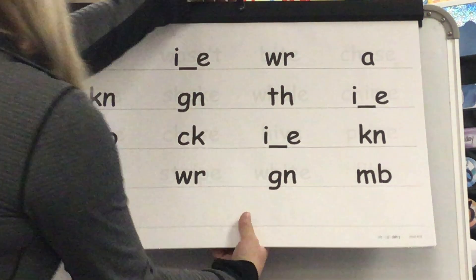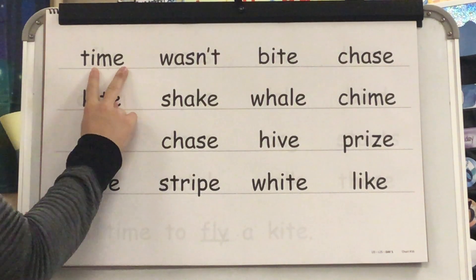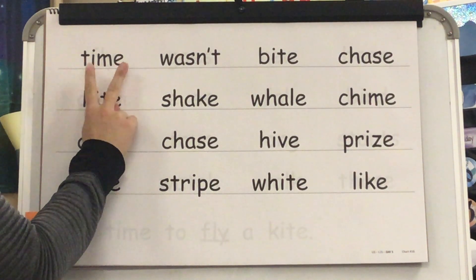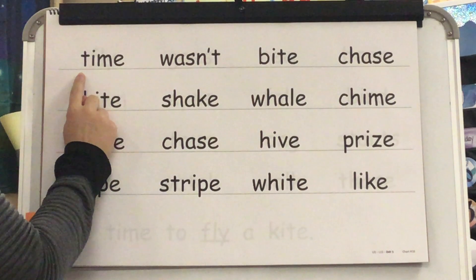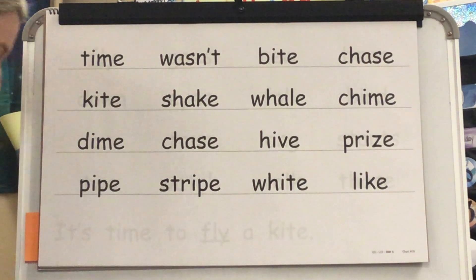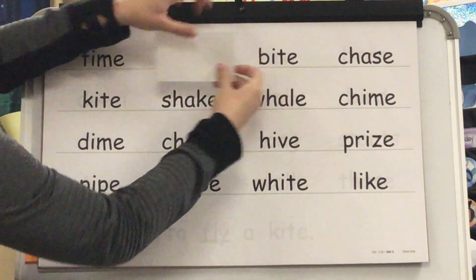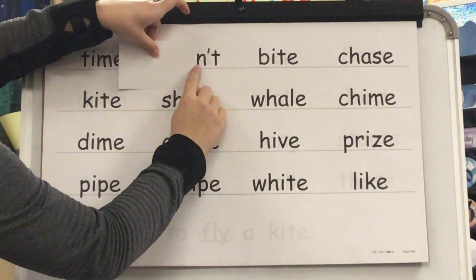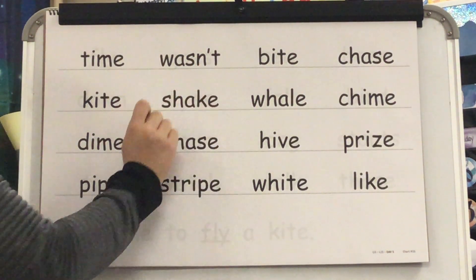Time to put our sounds into words. Sound: I. Blend: T. I'm. Word? Time. Yes, time. Word? Was. Blend: -nt. Contraction? Wasn't. Yes, wasn't.